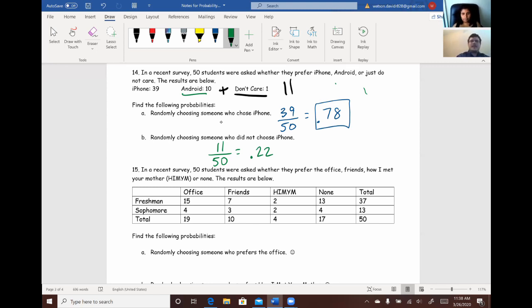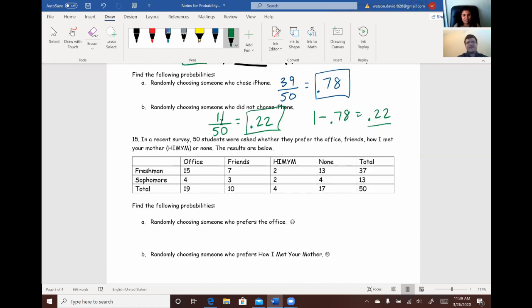All right. Now, one thing I do want to mention. You can get this same exact thing by just taking one and subtracting the people who did choose iPhone. So, 0.78 was the probability of somebody picking an iPhone. If you subtracted those, you would actually get 0.22 as well. So, you should get the same answer either way.